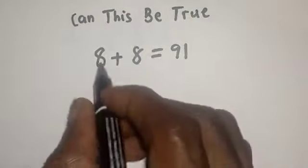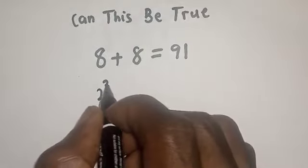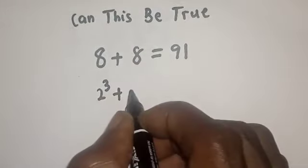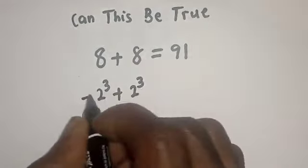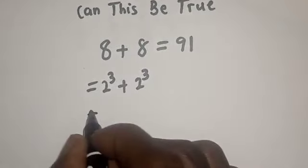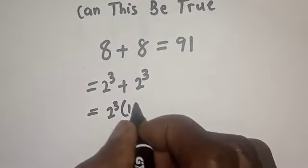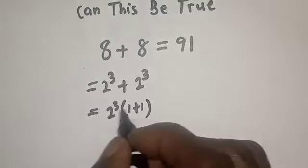Now take note of this: this is 2 raised to power 3 plus 2 raised to power 3. Then this is equal to 2 raised to power 3 bracket 1 plus 1, because this divided by this is 1, this divided by this is 1.